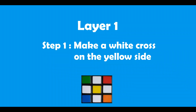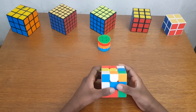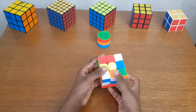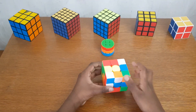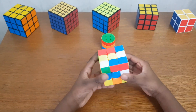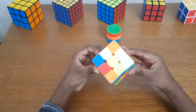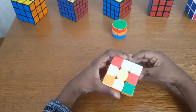Let's begin with the white layer. The first step is to make a white cross on the yellow side as shown in the image. The opposite of white is yellow, so flip the cube and make the white cross on the yellow side. Place the white middle pieces here. When you place the white middle pieces, make sure you don't remove any white pieces which are already placed. We are finished with step 1.